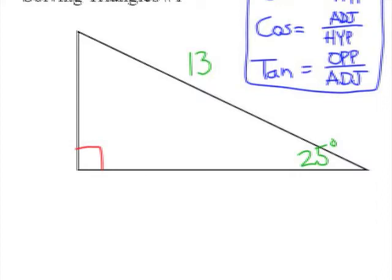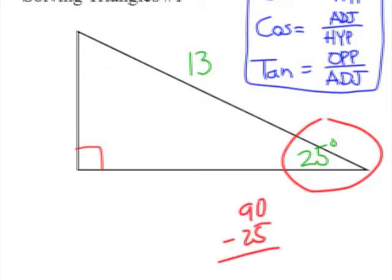So in this case, if one angle is 25, we know the other has to be complementary to that, which would be 65. So we've solved that part of the triangle so far. Now to find the missing side we choose which one we want to look at. Let's say that we want to find that vertical leg of the triangle right there.